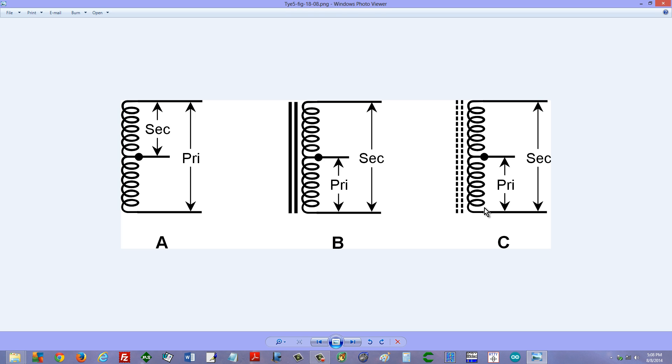Here at C, we have a powdered iron core. Again, might be suitable for audio or radio frequencies. The primary and secondary, once again, we have a step up transformer.